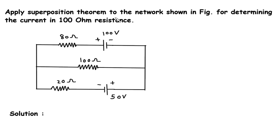Apply superposition theorem to the network shown in figure for determining the current in 100 ohm resistance. We have to determine current through this 100 ohm resistance using superposition theorem.